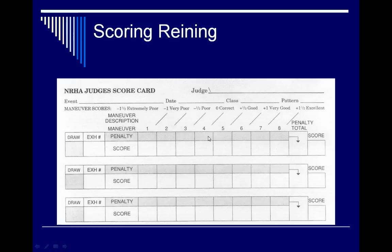Penalties are only assessed if a horse does something incorrectly. Sometimes you'll have a penalty mark, sometimes you won't — horses certainly can go through a whole reining pattern with no penalty points.